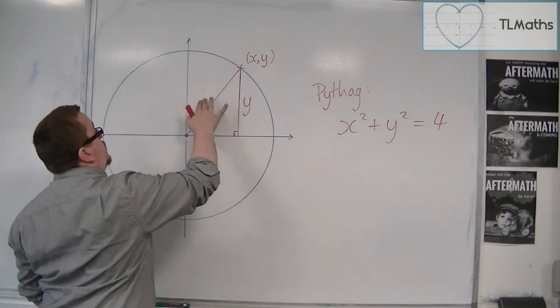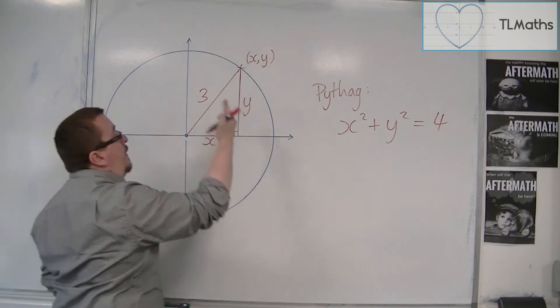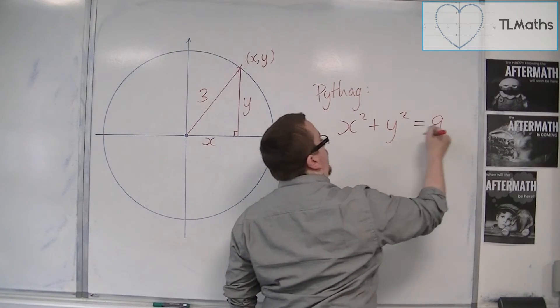And if I then change this to a 3, then the equation would be x squared plus y squared equals 9.